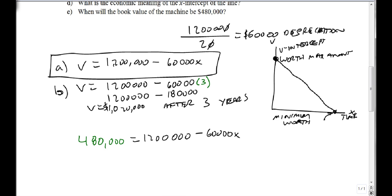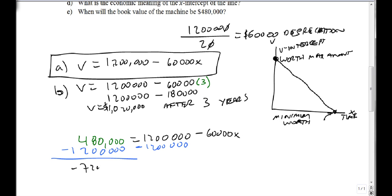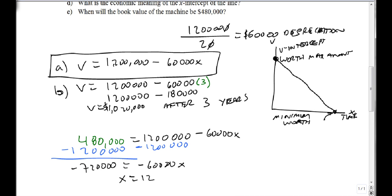Let's subtract 1.2 million from both sides. Using the calculator, 480,000 minus 1,200,000 equals negative 720,000 equals negative 60,000x. Divide by negative 60,000, and we get x equals 12. This means when 12 years have passed, the book value will be $480,000.